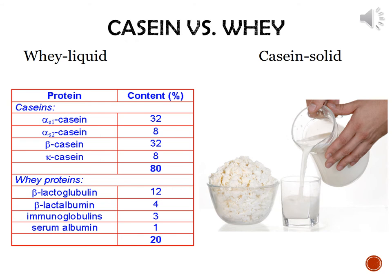There are two main proteins found in milk: whey, which is the liquid protein, and casein, which is the solid protein. When separated, casein will be much thicker and in much larger clumps than the whey. If you've ever had cheese curds, those curds are examples of casein — very large clumps. The casein contains some fat, while the whey contains some milk sugars and salts.